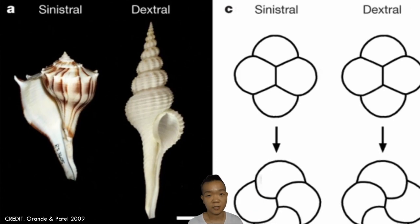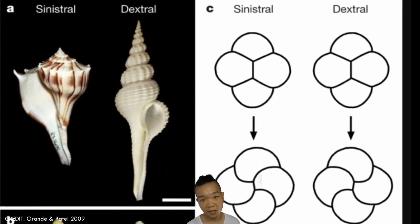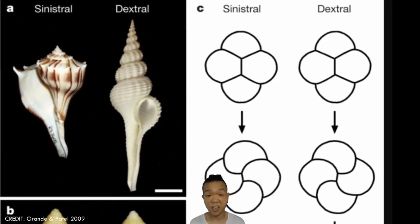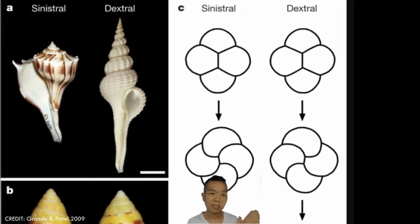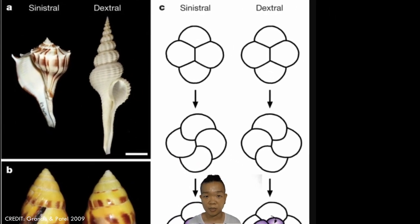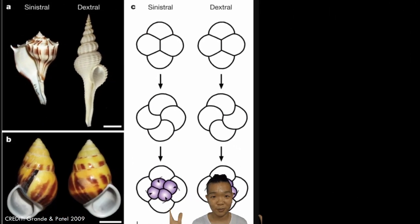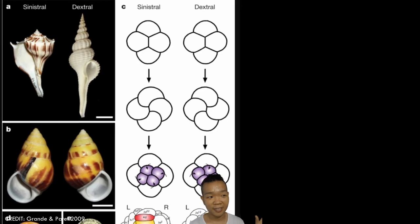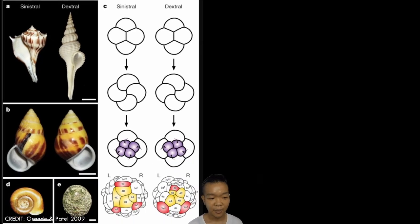Chirality refers to whether the shell is right-handed — dextral — or left-handed — sinistral. In the world of gastropods, it's difficult for them to mate if they have opposite chiralities. But for you, in the context of this subject, chirality helps with specimen identification.